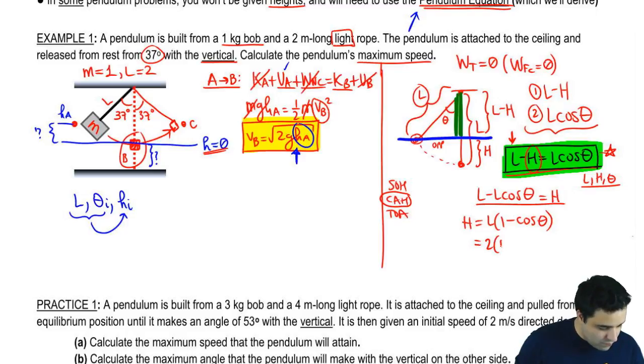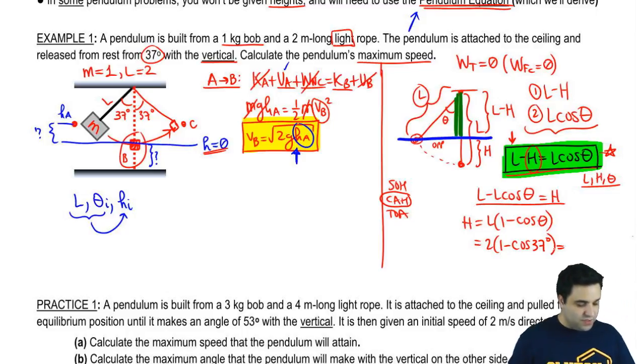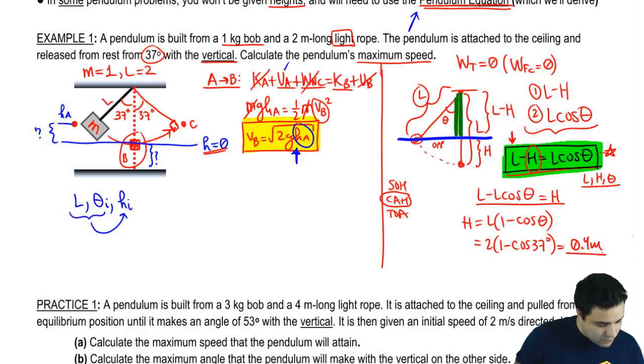The length is 2, 1 minus the cosine of 37. Your calculator obviously has to be in degrees. And when you do this, you get a height of 0.4. 0.4 is what's going to go right here.